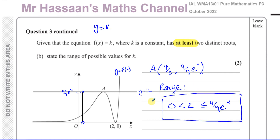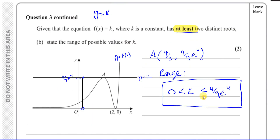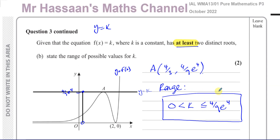This type of question requires you to picture what's happening graphically and understand what 'at least two distinct roots' means. That concludes question three from the October 2022 P3 paper. Other questions from this paper and from the topic of differentiation and functions can be found in the playlists. Subscribe to the channel — thank you for watching and see you soon.